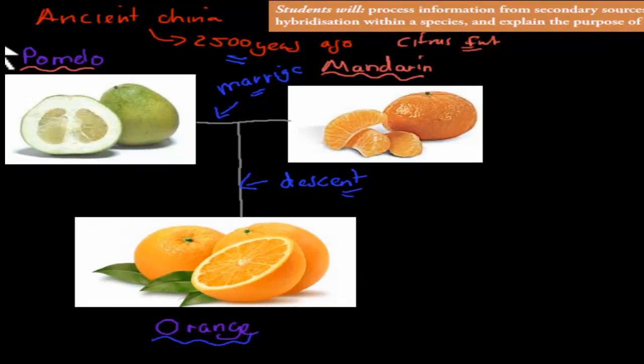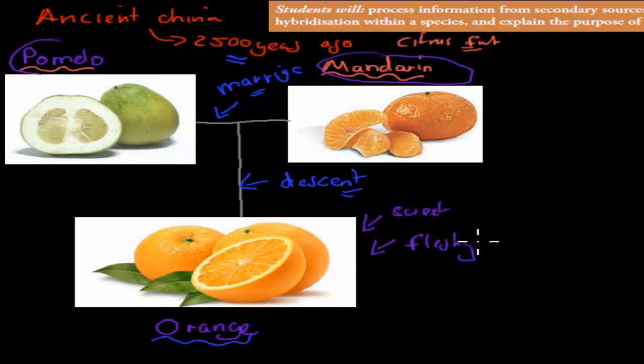We have the orange which comes from a mixture, a hybrid of both the pomelo and the mandarin. And it says explain the purpose of this hybridization. Well the orange has features of both, so it obviously has that nice sweet taste of the mandarin, but it also has that fleshy texture, the fleshy texture of the pomelo.